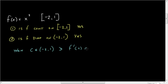such that the derivative at C is equal to the slope of the secant line connecting A and B.